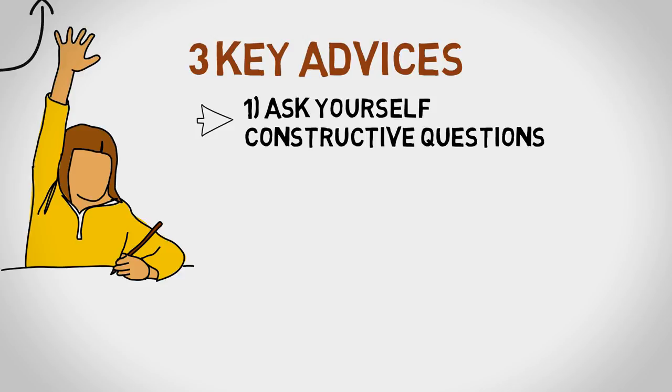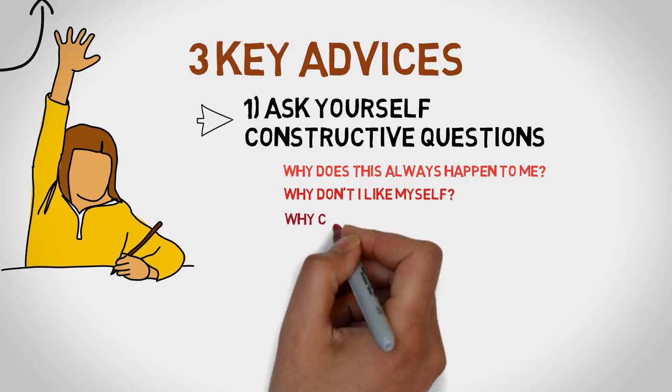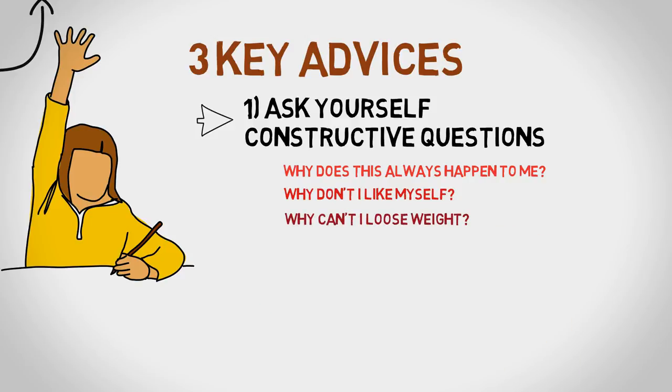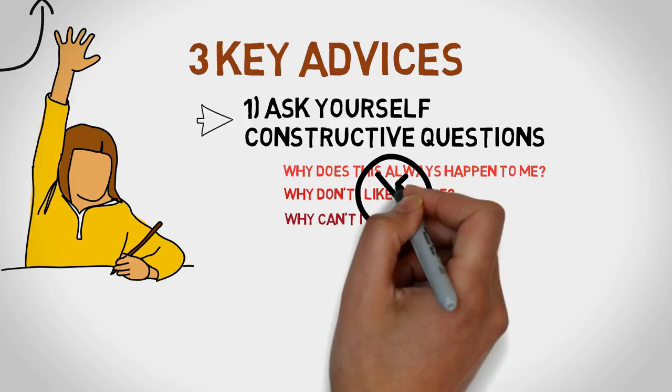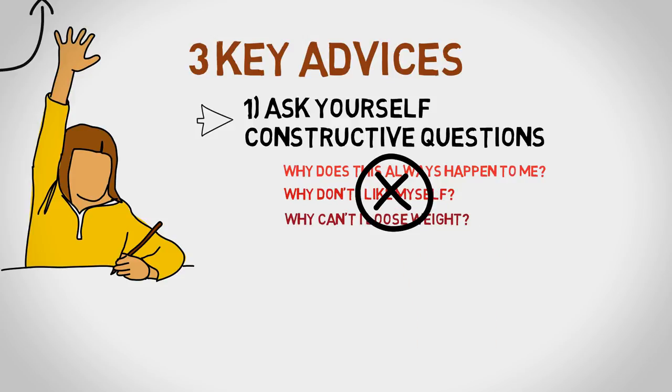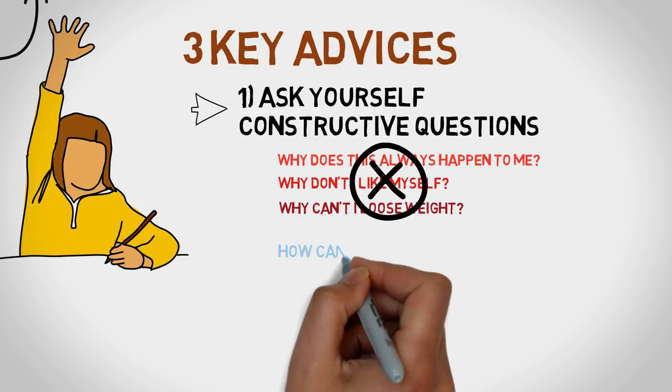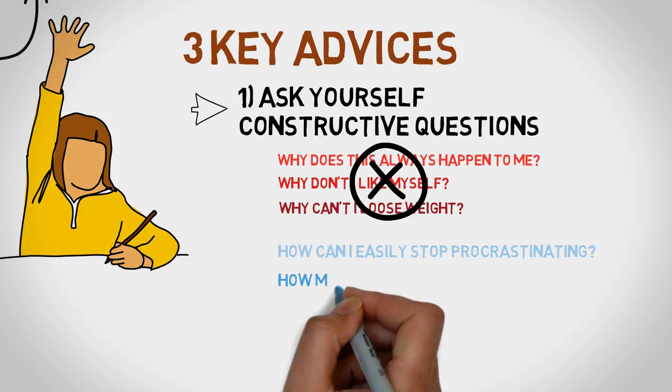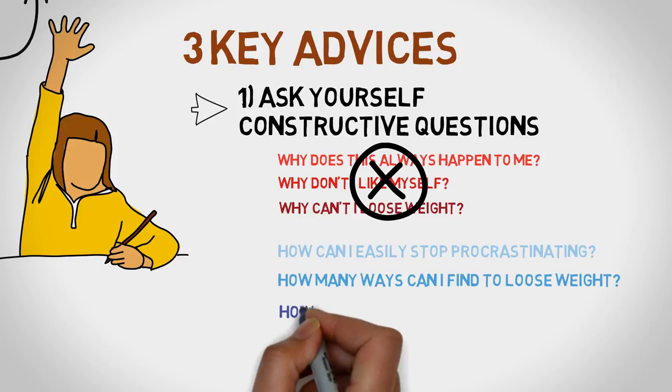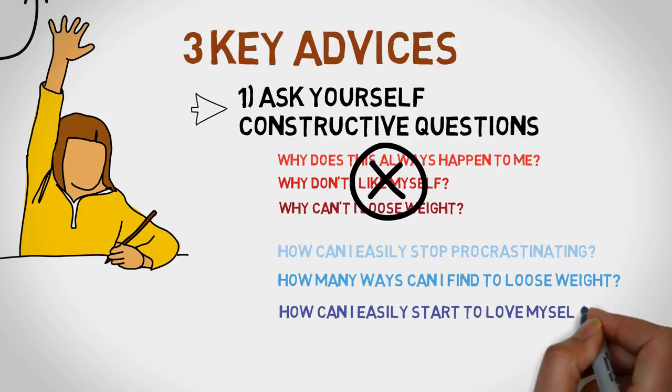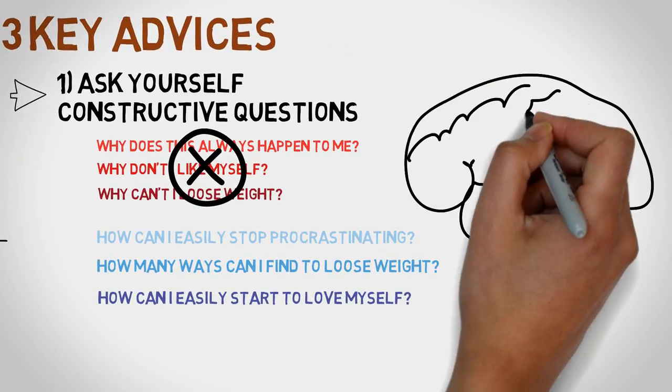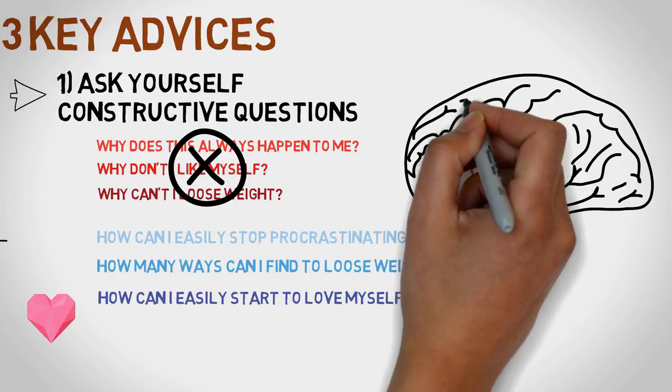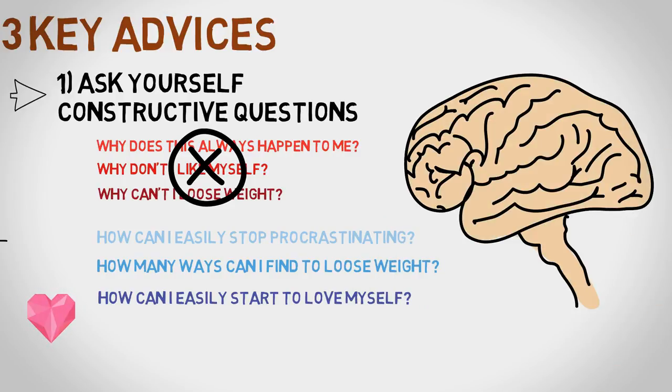We ask ourselves such unhelpful and destructive questions like, why does this always happen to me? Why don't I like myself? Why can't I lose weight? Now ask questions that will empower you, reframe these questions. For example say, how can I easily stop procrastinating? Or how many ways can I find to lose weight? Or how can I easily start to love myself? This puts your brain in a more resourceful state where it is searching for answers rather than switching off.